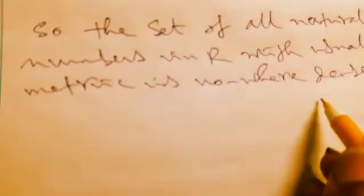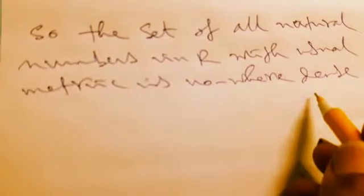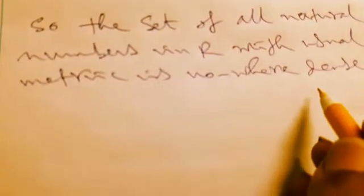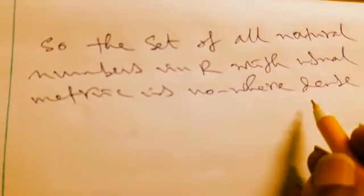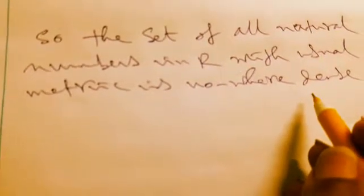So in this way we get some idea about everywhere dense and nowhere dense with a few examples, especially for rational numbers and natural numbers.